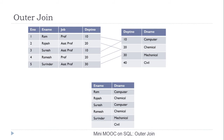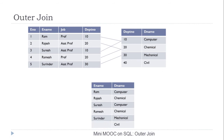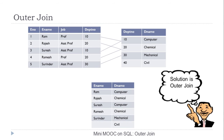The output will be the same five records, but it is desirable to produce an output where it is indicated that dename 'Civil' has no corresponding employee. This more useful output shows all departments including those with no employees. In order to show this output, the solution is outer join.